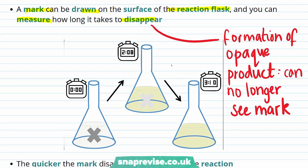In this diagram, you can see an example of what would happen. In the first picture, the timer has started, and the mark on the side of the reaction flask can clearly be seen. But as the reaction progresses, the opaque product is formed, and the mark begins to disappear. The timer should be stopped at the point in which the mark has completely disappeared.